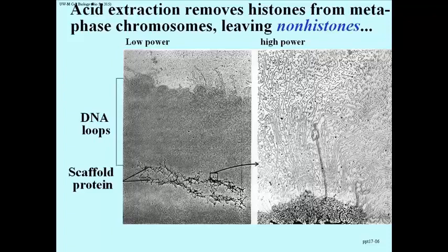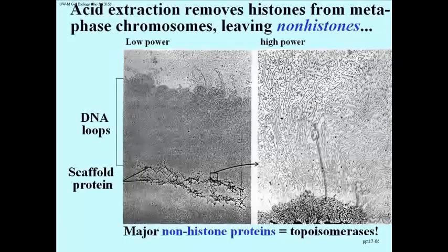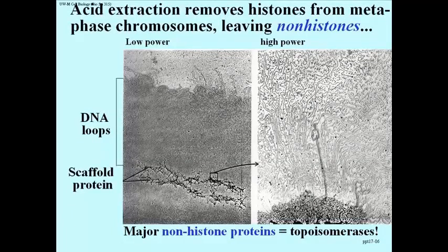Quantitatively, a major component turns out to be topoisomerases. And that's interesting because it suggests that there are topoisomerases in the scaffold in sufficient quantity to relieve supercoiling during replication of eukaryotic DNA during the S phase of the cell cycle.